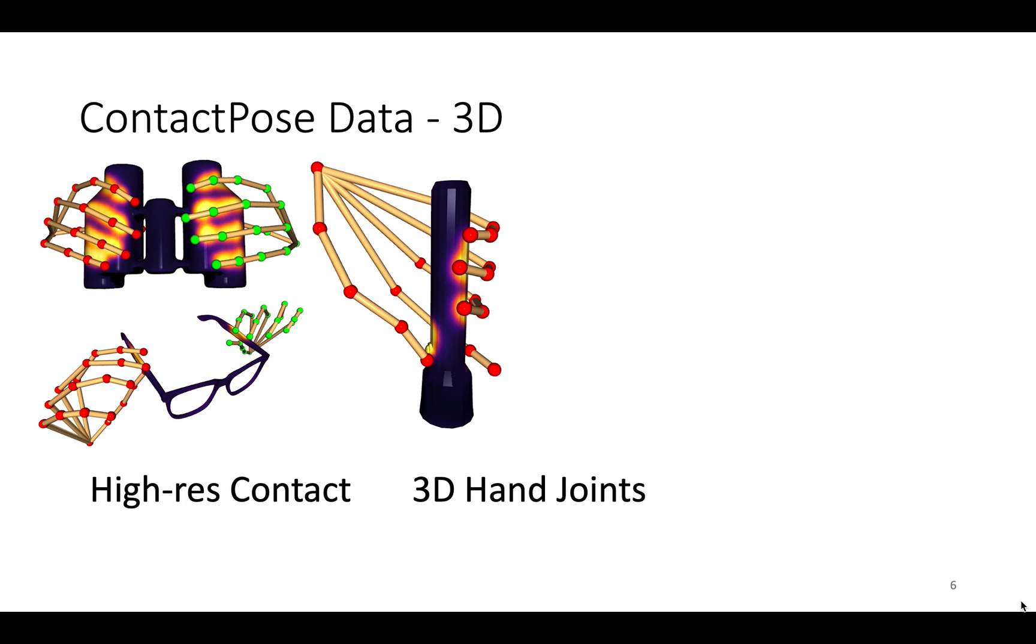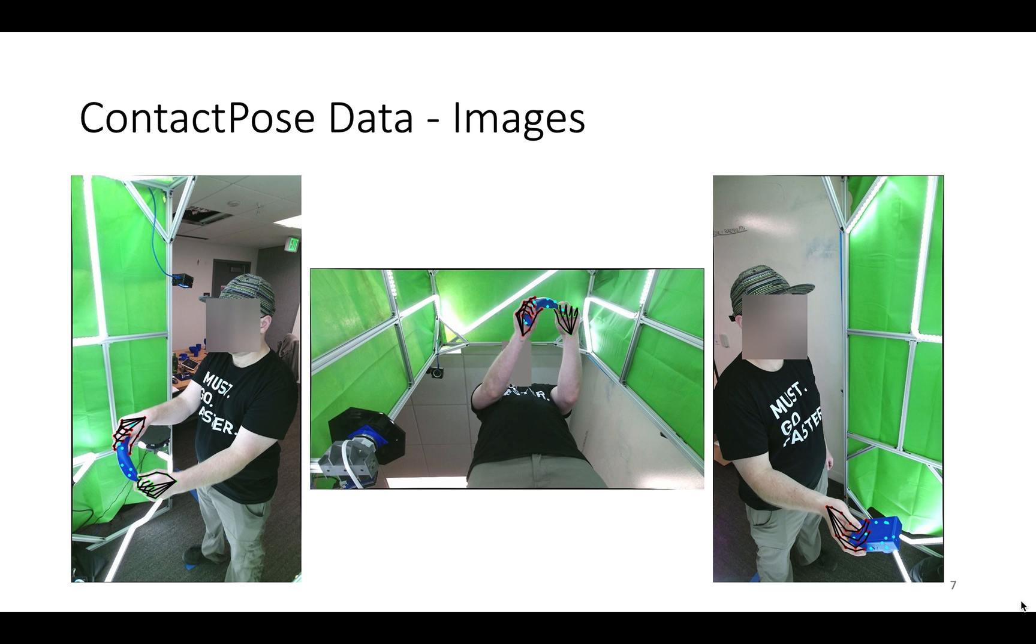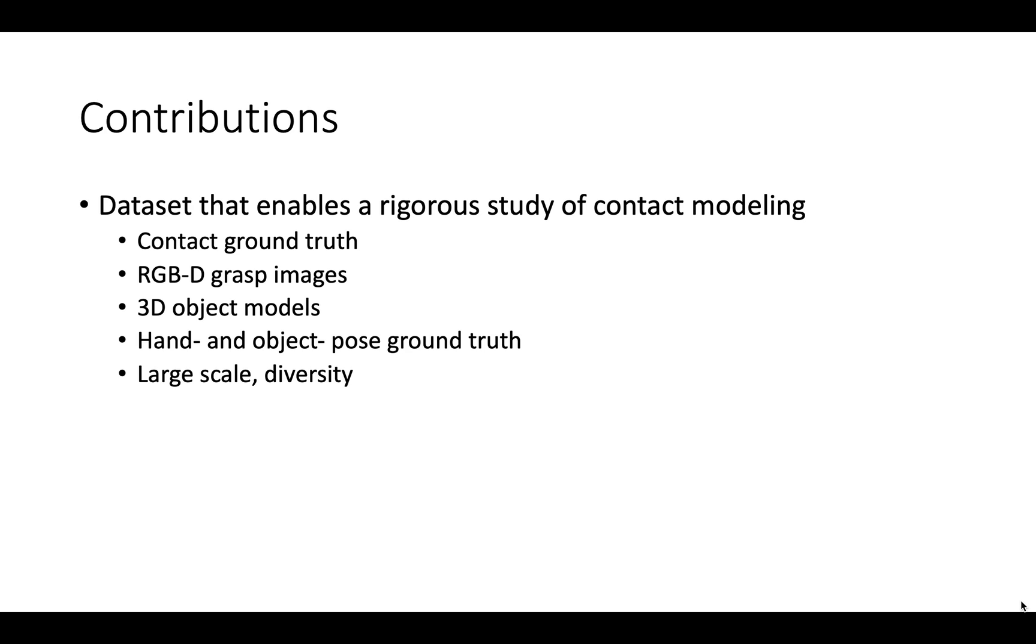Here, we present the ContactPose dataset which has high-resolution contact encoded in the mesh texture, 3D hand joints, optimized MANO hand meshes, and multi-view RGBD images annotated with hand and object pose. This data enables a rigorous study of contact modeling by providing ground-truth contact paired with various data modalities. We also present our own experiments on learning contact models and comparisons with heuristic baselines.